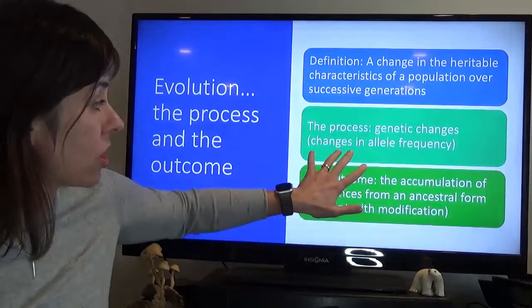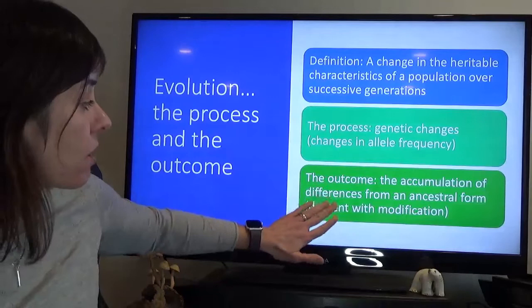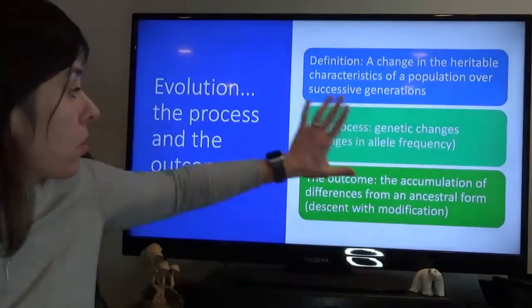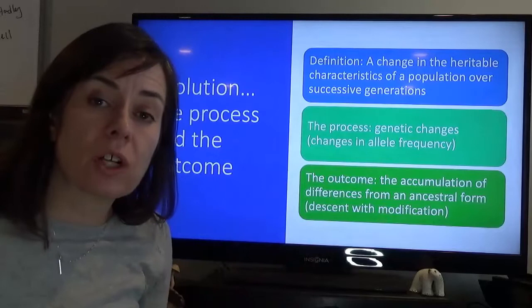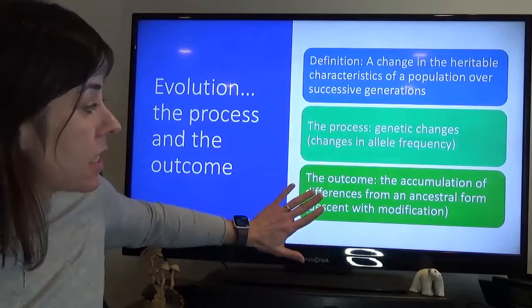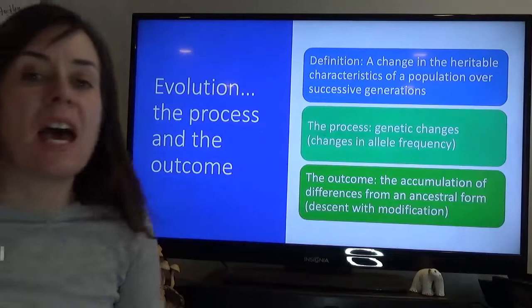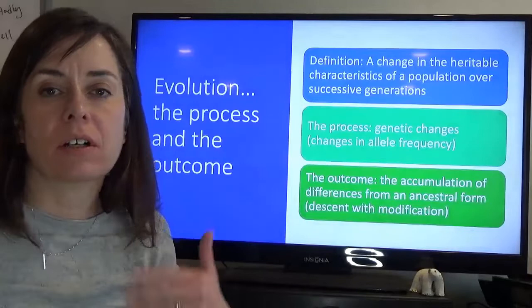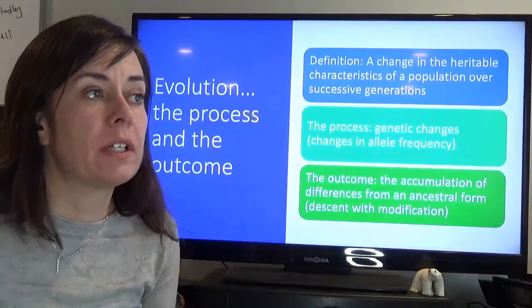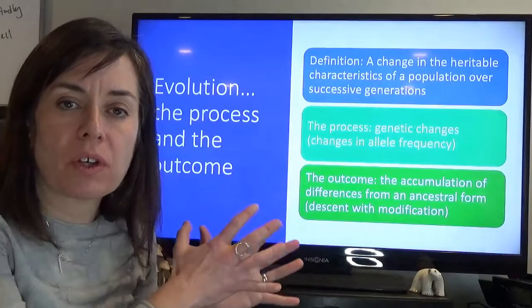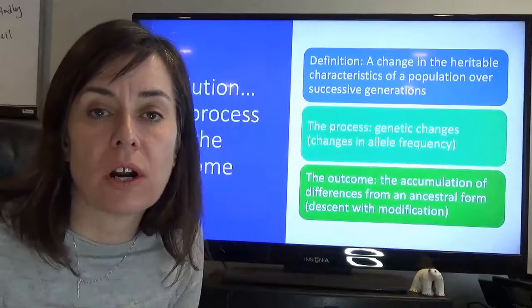The process involves genetic changes, or changes in allele frequency, and the outcome is the accumulation of differences from an ancestral form — descent with modification. There are changes in allelic frequency due to accumulation of genetic changes as well as natural selection processes, and the outcome is some change in a species in comparison to its ancestral form. In ecology, this really dictates the outcome of most ecological interactions; the adaptations that evolution has driven lead to the kinds of ecological interactions that we see.